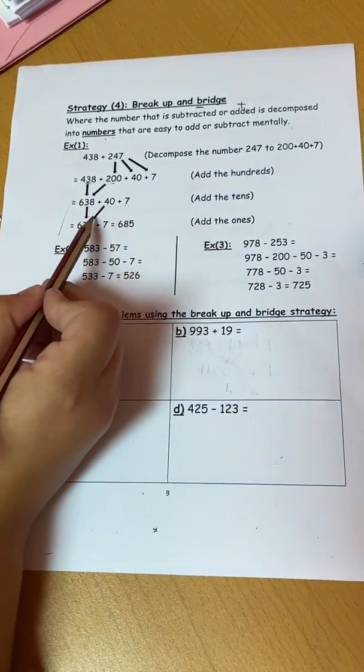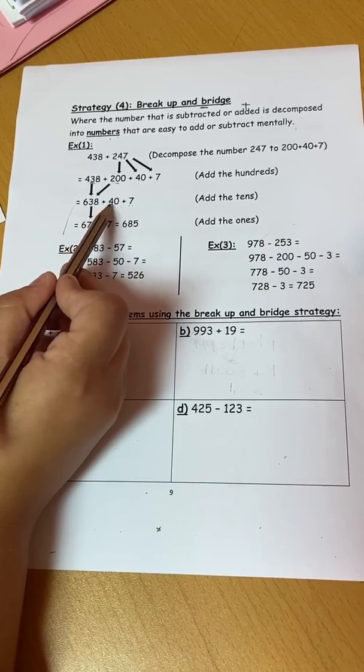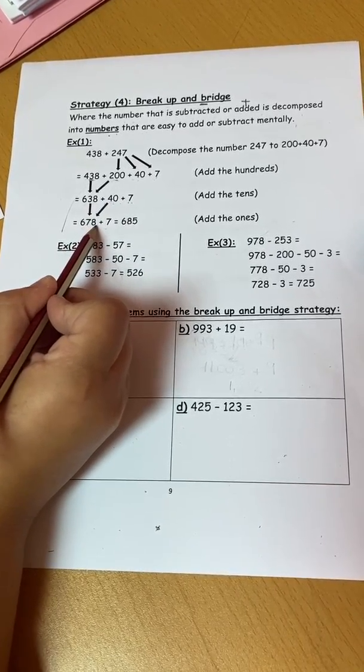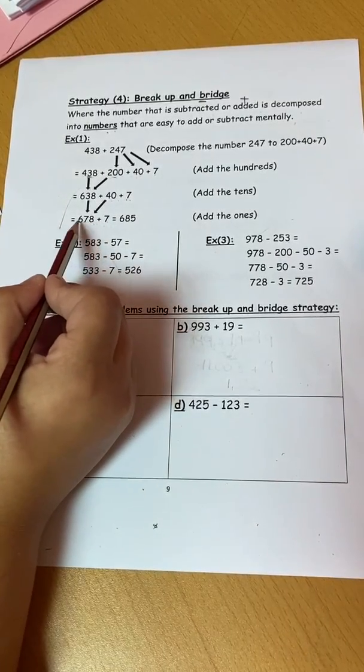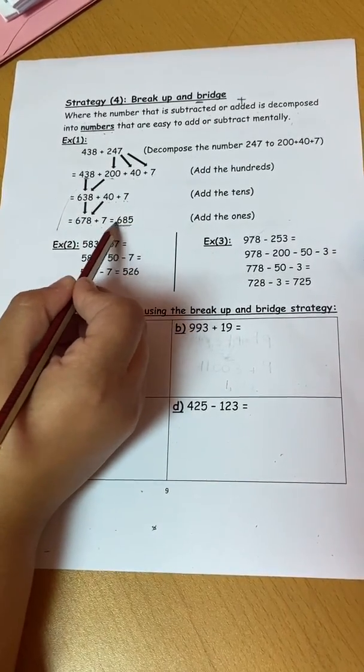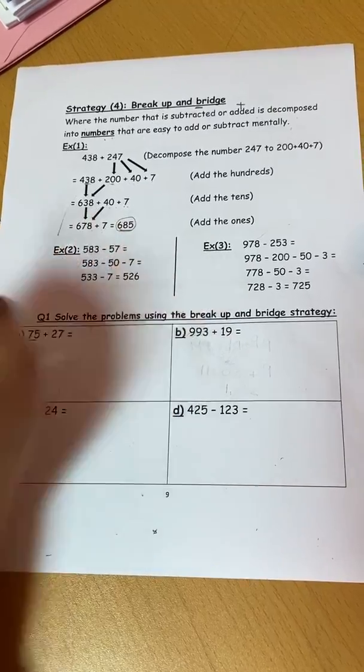Then I will add the tens together. 638 plus 40 I get 678 plus 7. Then at the end the ones together, 678 plus 7 I get 685.